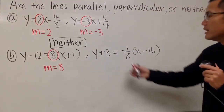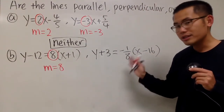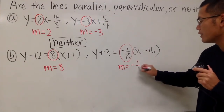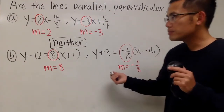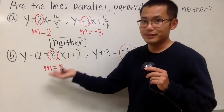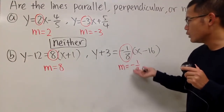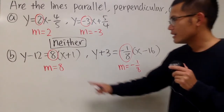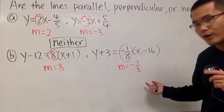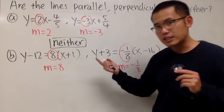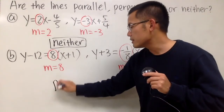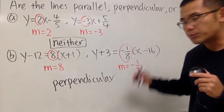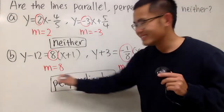Likewise, the second equation is also in point-slope form, so we can see that the slope is m equals negative 1 over 8. You don't have to work it out, but if you do, you get slope 8 for the first and negative 1 over 8 for the second. This is the opposite sign and the reciprocal. So these two lines are perpendicular.